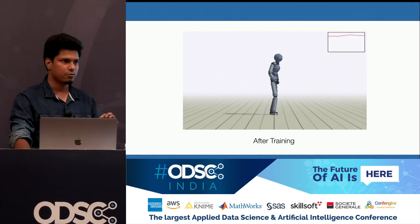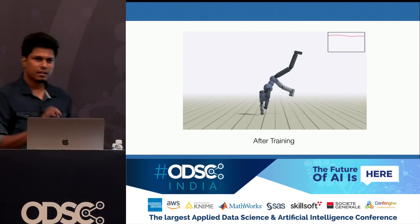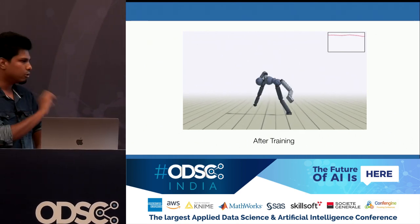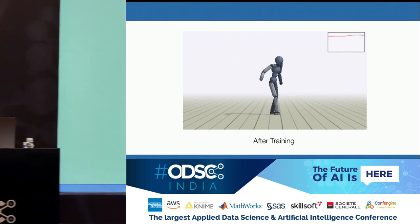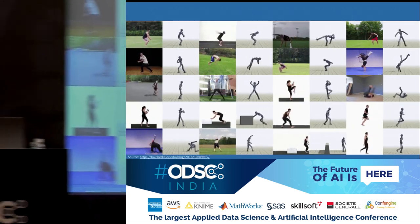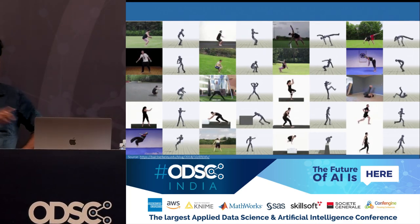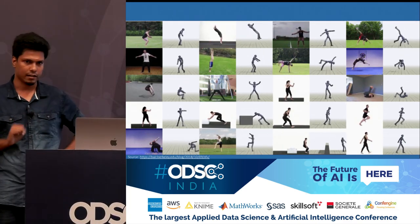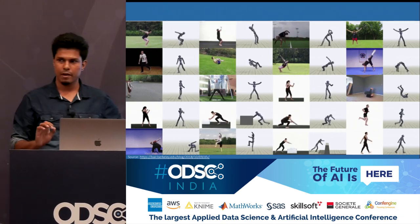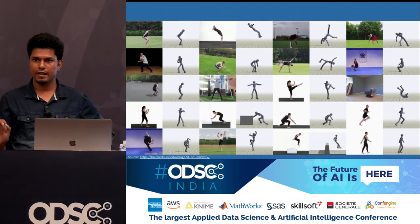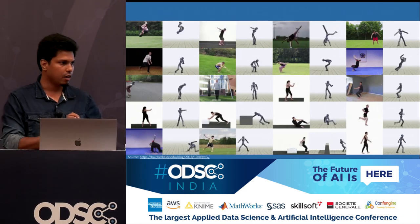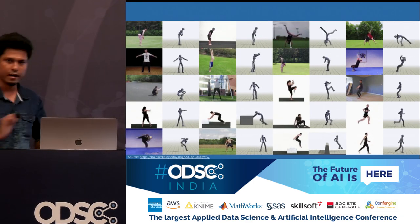Naturally, the next question you'll ask is: if I show it another video, will it be able to learn from that? The answer is yes. In fact, you can show it any arbitrary video and it will be able to learn how to do that task. This work was done by the AI research lab at UC Berkeley, and the goal of our presentation is to break down algorithms that can do this kind of learning.